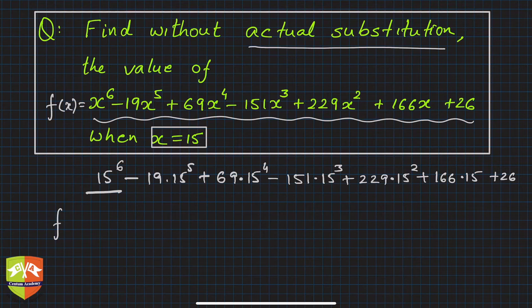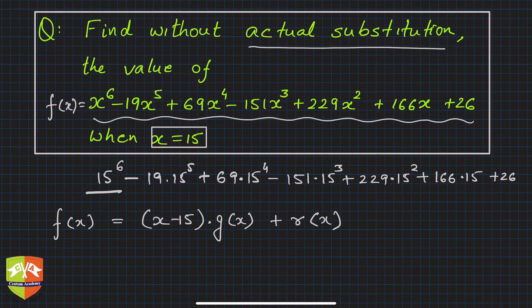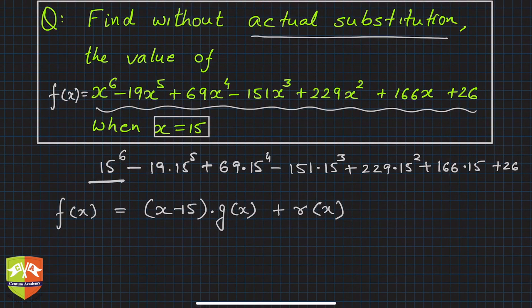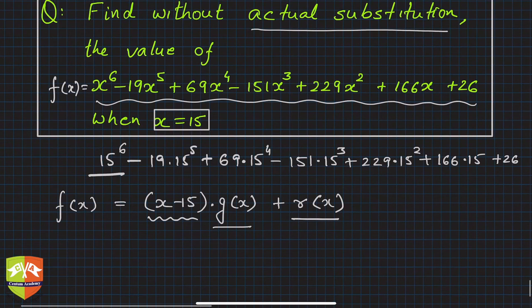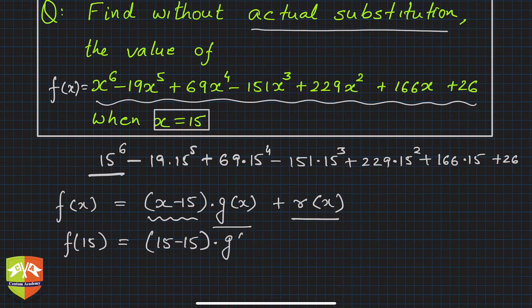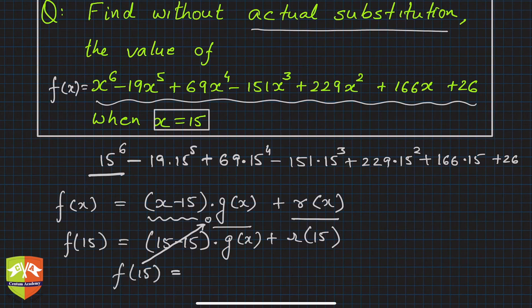We can write f(x) as x minus 15 times some g(x) - we don't know g(x) right now - plus r(x). We've learned that dividend equals divisor times quotient plus remainder. So if you divide f(x) by x minus 15, you get some g(x) and also r(x). What will f(15) be? It becomes 15 minus 15 times g(x) plus r(15), and since 15 minus 15 is zero, f(15) is nothing but r(15).